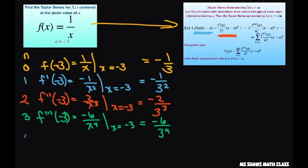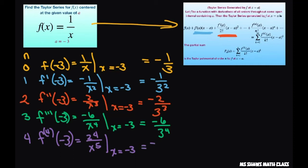For n equals 4, take the fourth derivative at negative 3. That's going to equal 24 divided by x to the fifth power. When you evaluate that at x equals negative 3, that's going to be negative 24 divided by 3 to the fifth power.